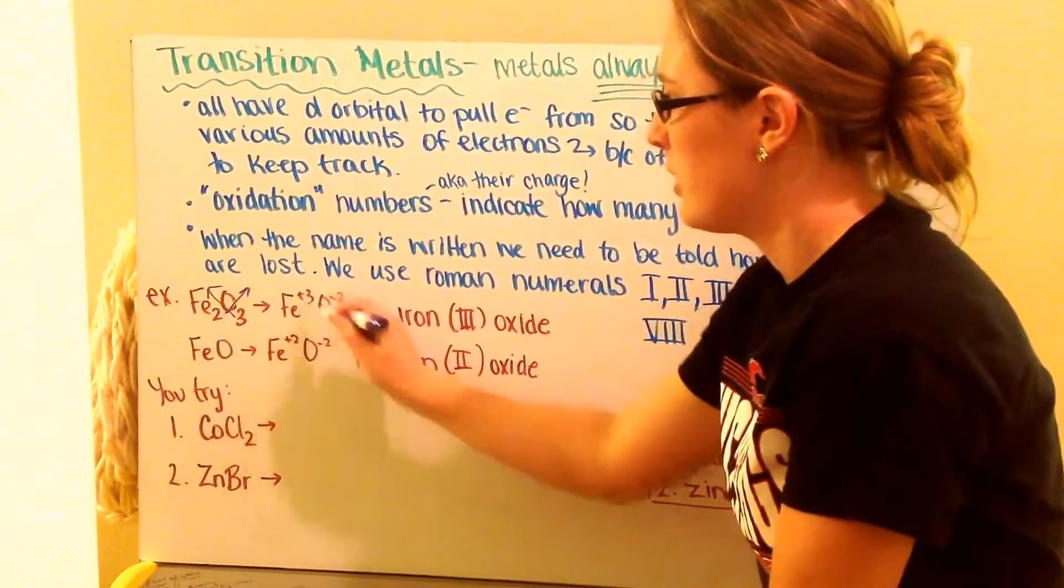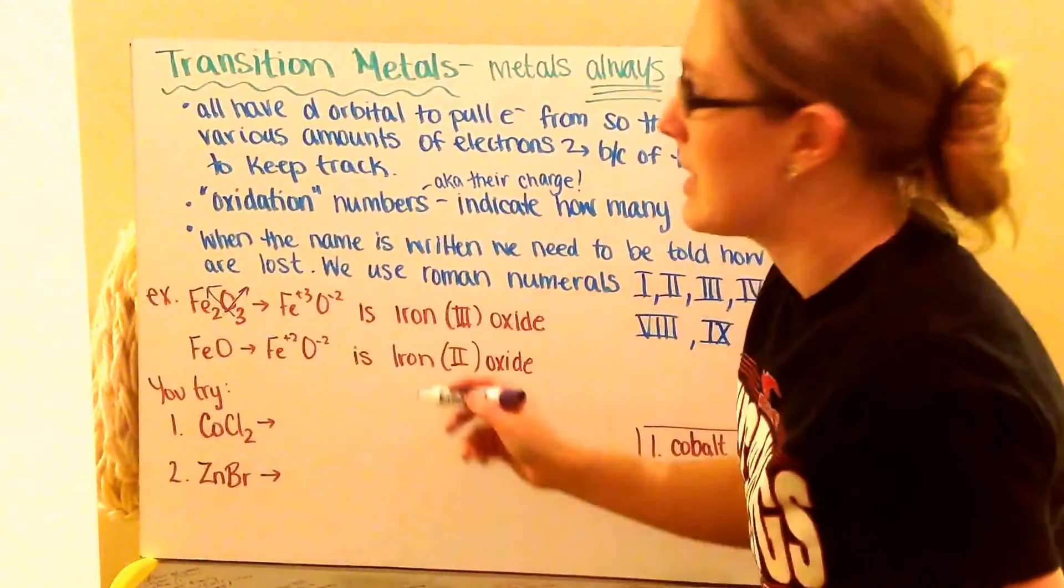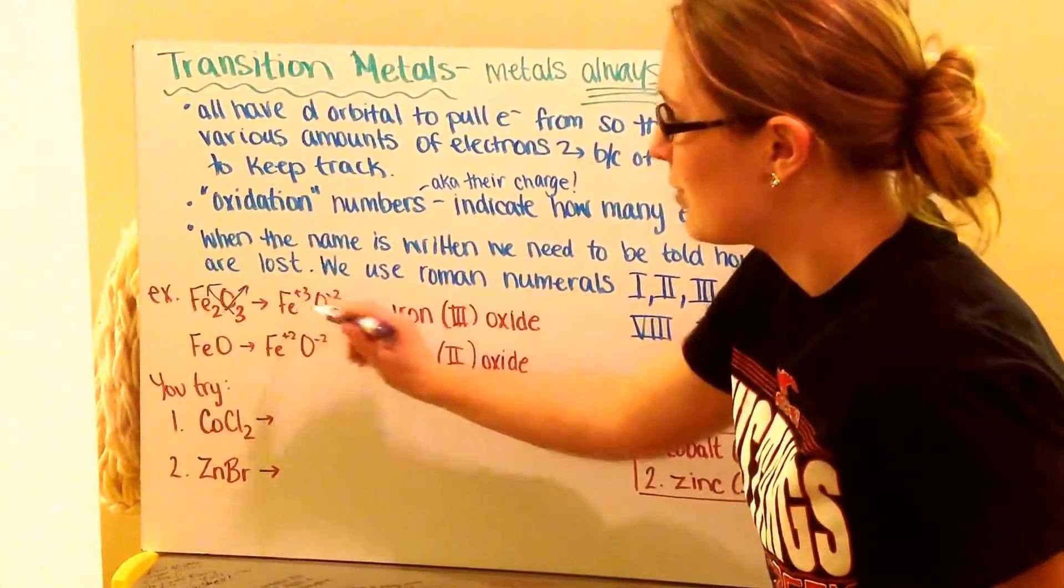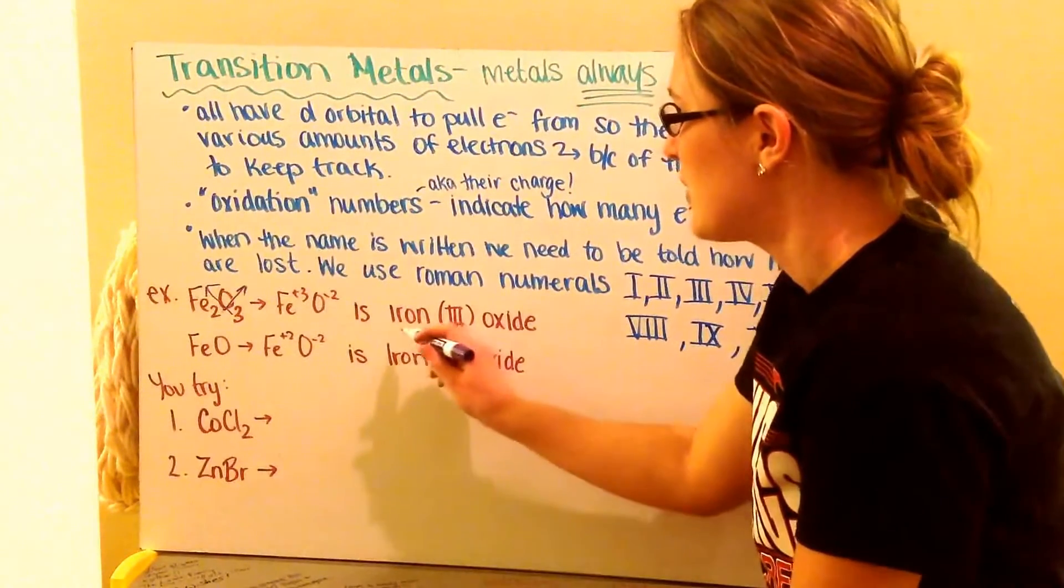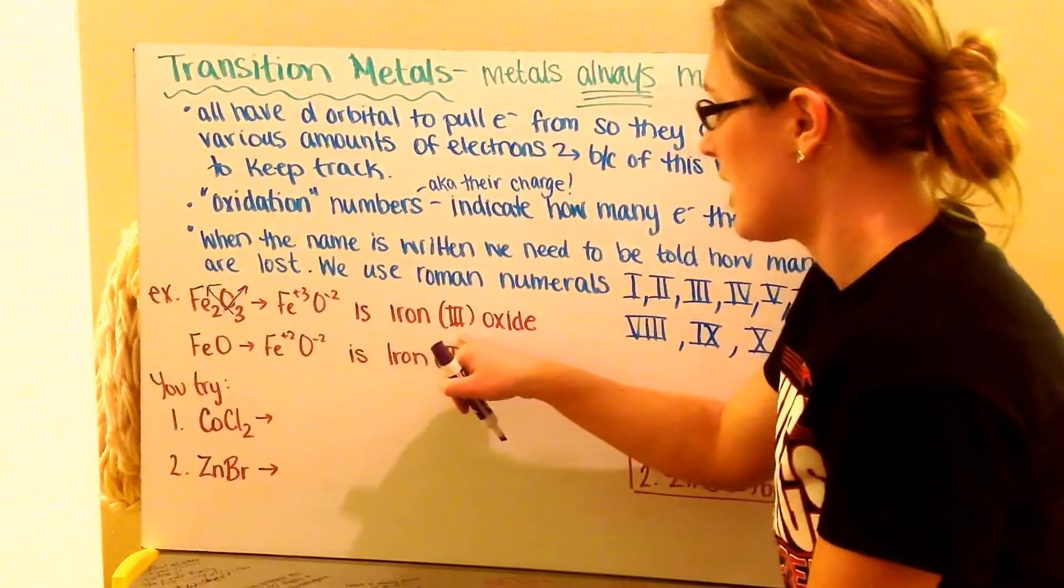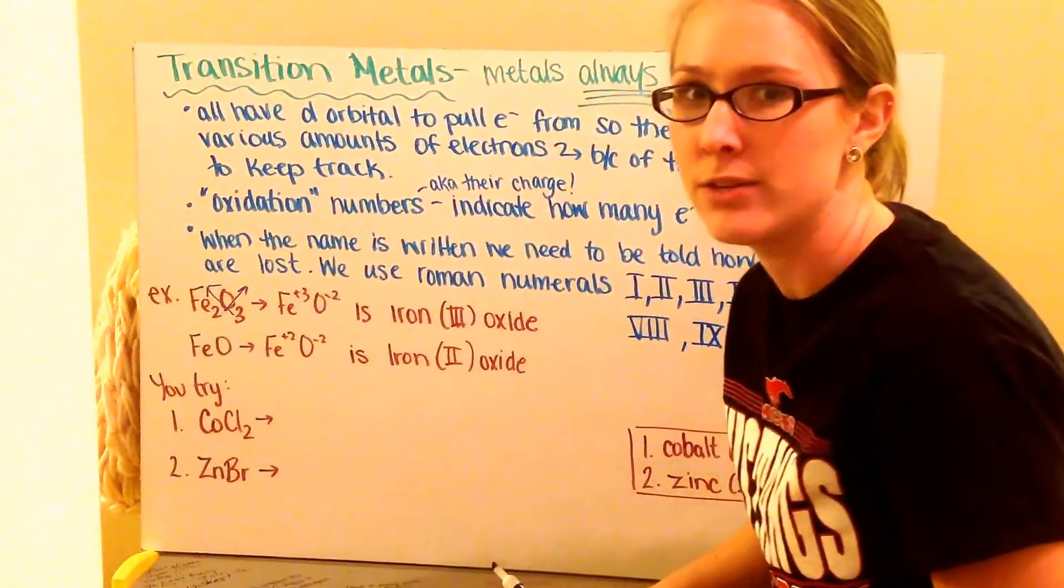I find that I have iron plus 3 and oxygen minus 2. Now when I go to write the name, I need to tell my audience, hey, I have iron plus 3, not iron plus 2, not iron plus 1, but plus 3. So I write it as iron (III) oxide, and I read it as iron 3 oxide.